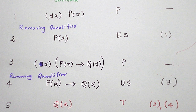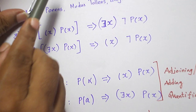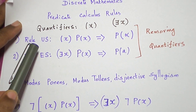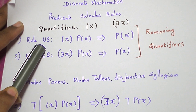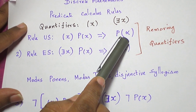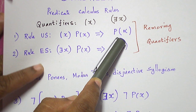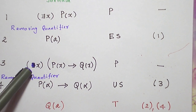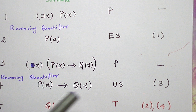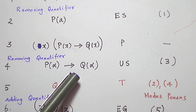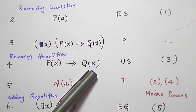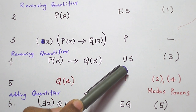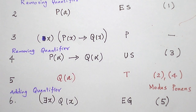When we have a universal quantifier, it shall be removed by Rule US. When we remove it using Rule US, we shall use a Greek letter. So I am going to remove this quantifier using the Greek letter alpha, giving P(α) → Q(α). This step is obtained using Rule US applied to step 3.